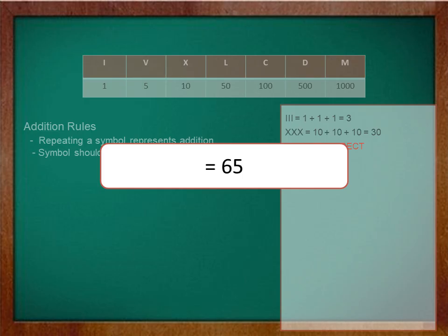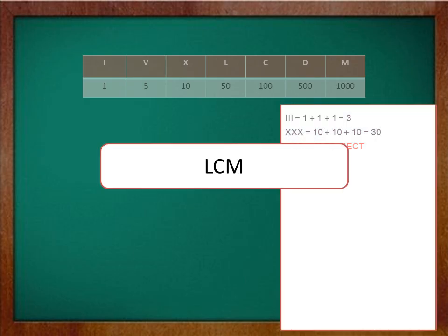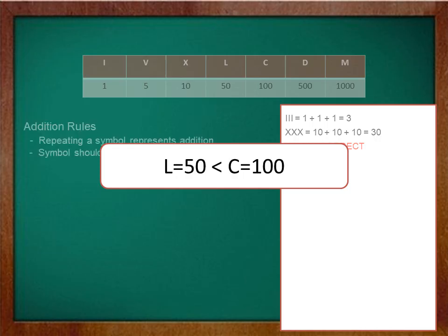What do you think of LCM? In this case L is equal to 50 which is less than C which is equal to 100, and C is less than M which is equal to 1000. So LCM is incorrect.